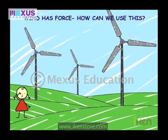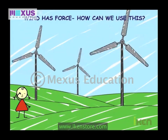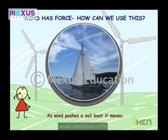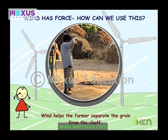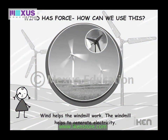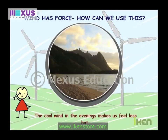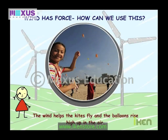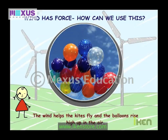Wind has force. How can we use this? As wind pushes a sailboat, it moves. Wind helps the farmer separate the grain from the shaft. Wind helps the windmill work, and the windmill helps to generate electricity. The cool wind in the evenings makes us feel less hot. The wind helps the kites fly and the balloons rise high up in the air.